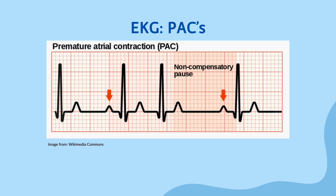The evaluation of PACs starts with a thorough medical history and physical exam, but the next step is a 12-lead EKG, which is the most important diagnostic tool for PACs. The EKG will show early beats originating from the atria, which are different from the normal beats originating from the sinus node, helping to distinguish PACs from other cardiac conditions.